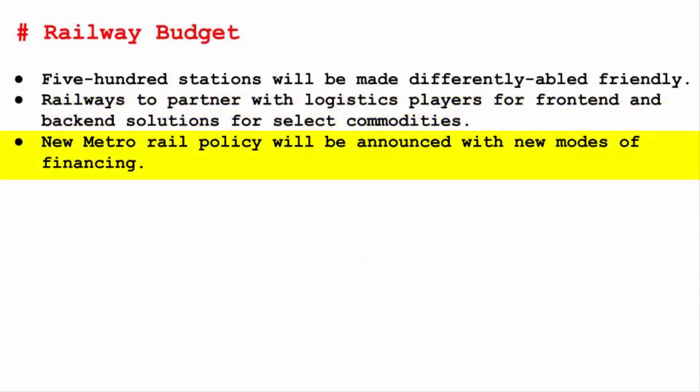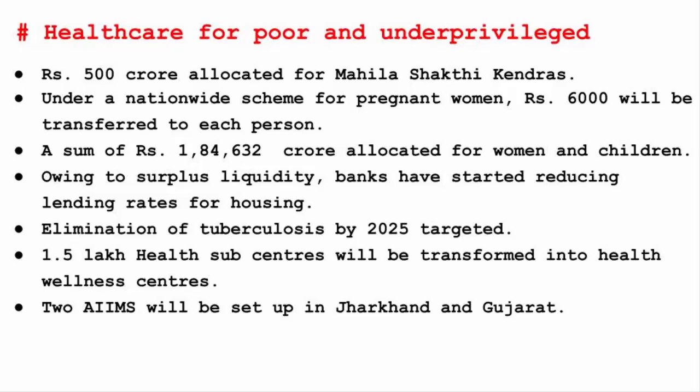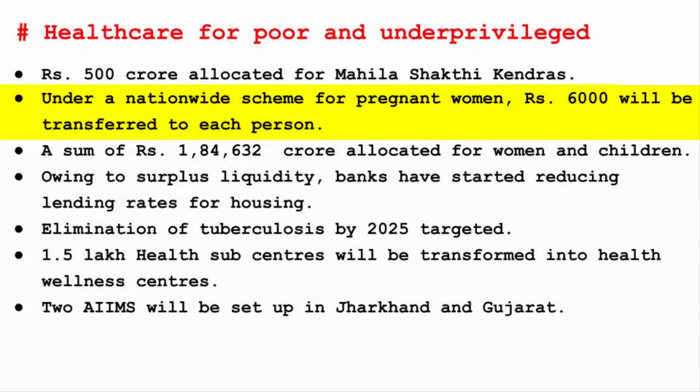A new metro rail policy will be announced with new modes of financing, expected to generate new jobs for the youth. For healthcare for the poor and underprivileged: Rs. 500 crore has been allocated for Mahila Shakti Kendras, which support empowering rural women with opportunities for skill development, employment, health, maternity benefit, nutrition, and digital literacy. Under a nationwide scheme for pregnant women, Rs. 6,000 will be directly transferred to each woman's bank account to help reduce the maternal mortality rate.